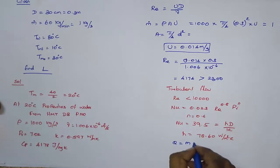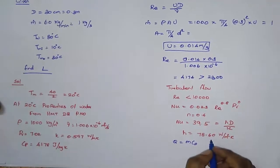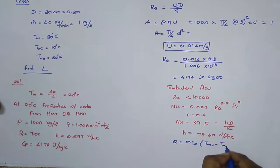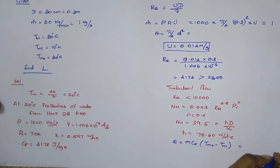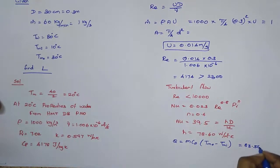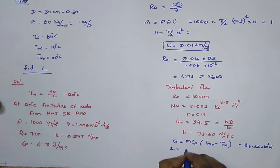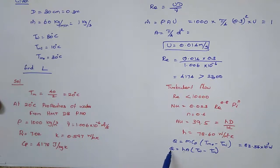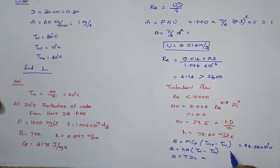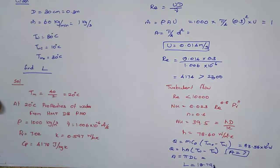Now use the heat transfer equation: Q = ṁ·c_p·(T_mo − T_mi) = 83.56 × 10³ W. Also, Q = h·A·(T_w − T_mean). Knowing Q, h, T_w, and T_mean, solve for area A. Since A = π·d·L, substituting the area value gives the tube length L = 18.79 m.